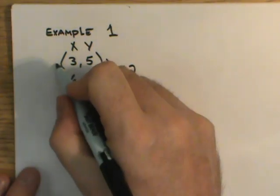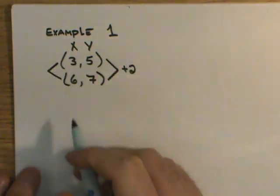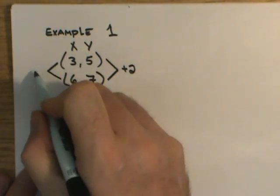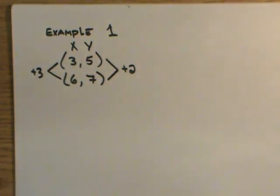To go from 3 to 6, that would be called delta x. Looks like a triangle there. And so we would say that's going to be plus 3. That's our change in values there.